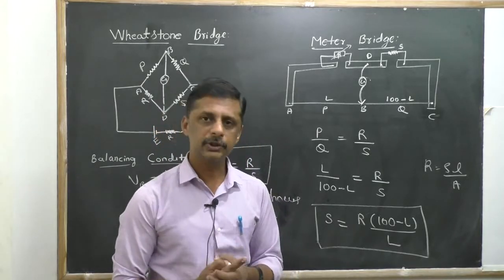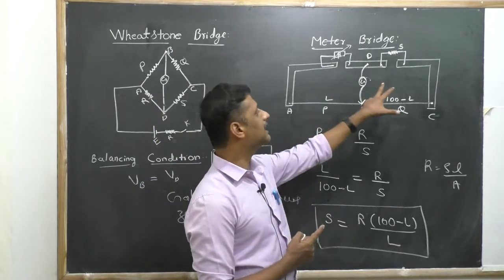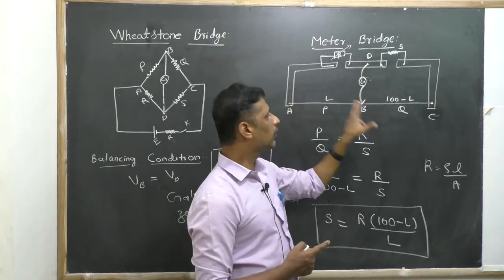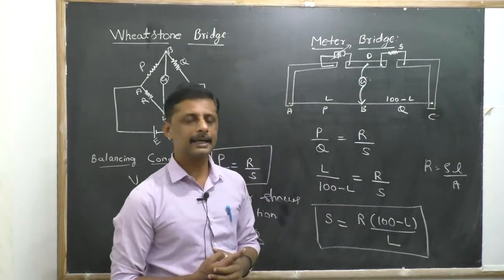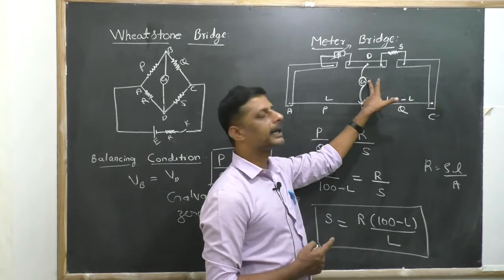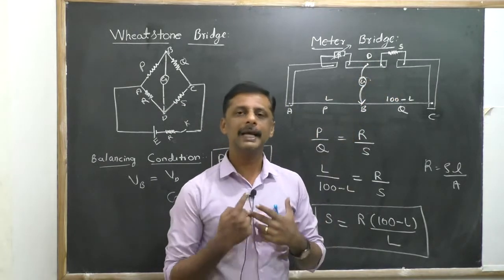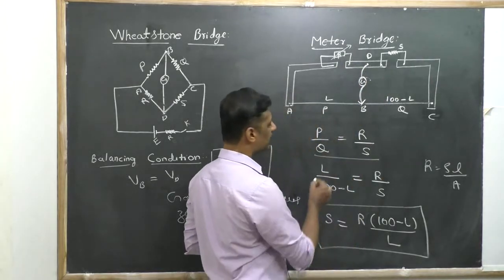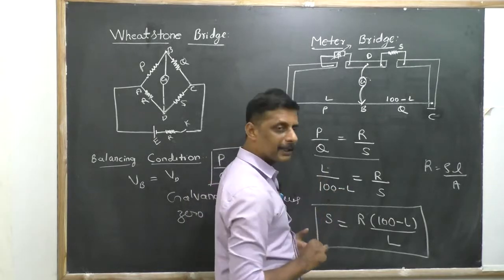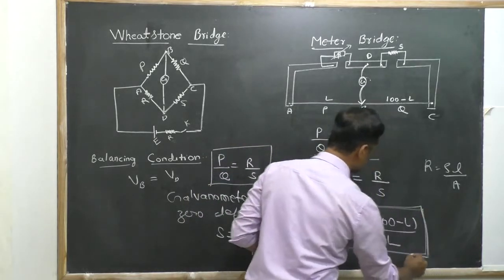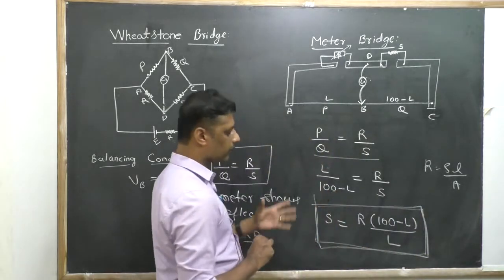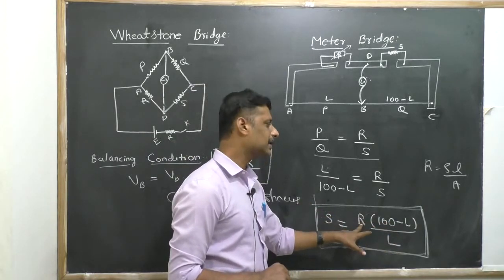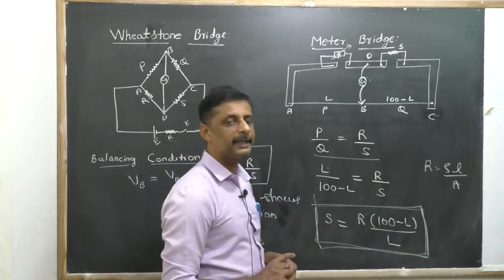The meter bridge is an apparatus used to find the unknown resistance as well as the resistivity of the material of the wire. It works on the principle of the Wheatstone network. It consists of two thick L-shaped metallic strips, with a wire of 100 centimeters between points A and C. A galvanometer is connected between point B and a sliding jockey. The balancing condition gives P/Q = R/S, where P = L and Q = 100 − L, yielding S = R(100 − L)/L.